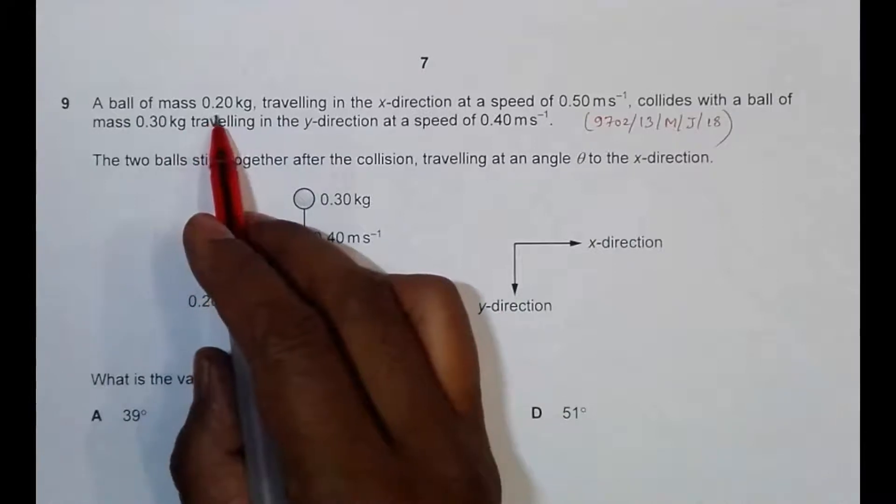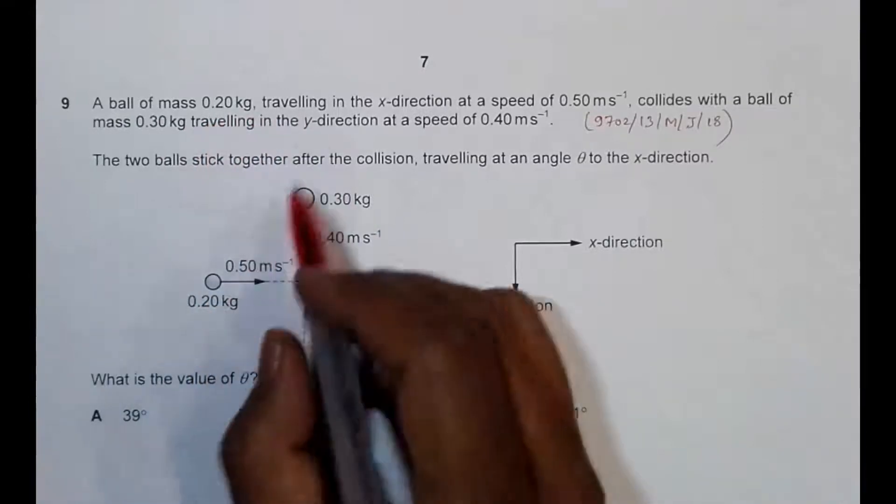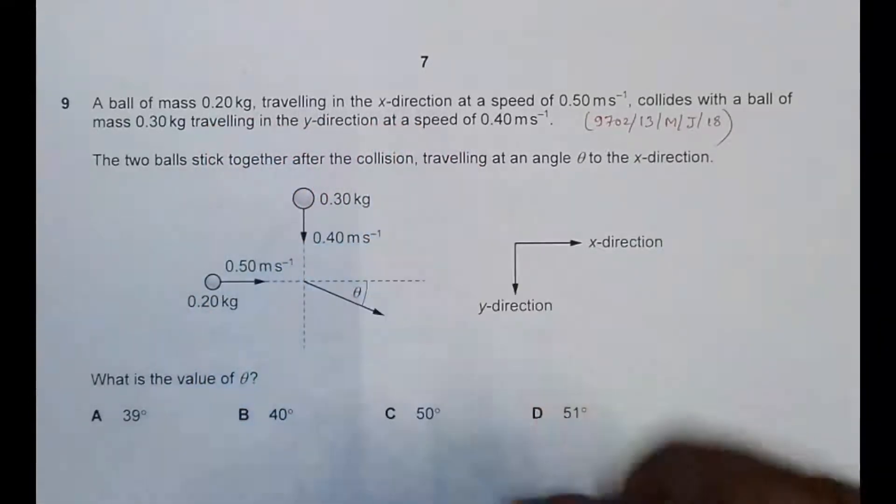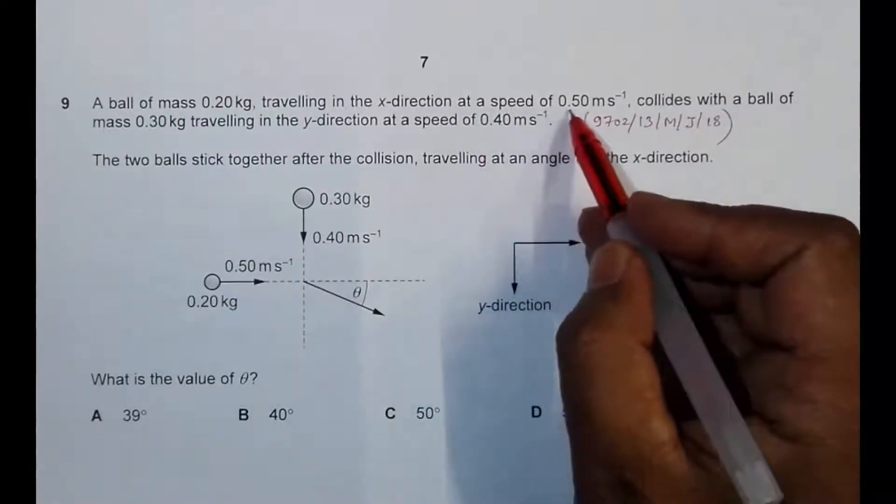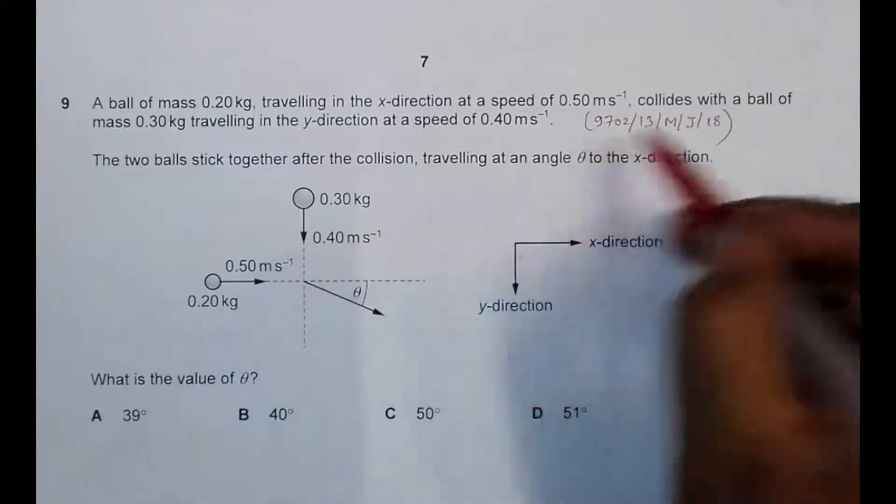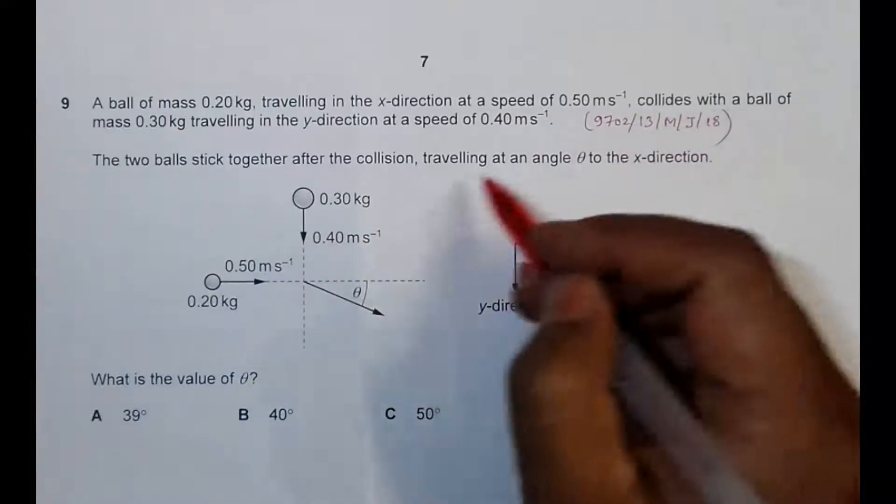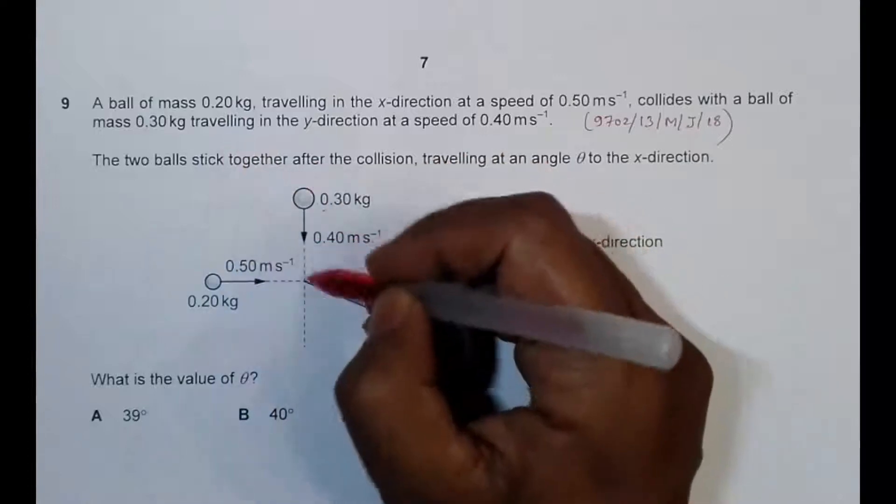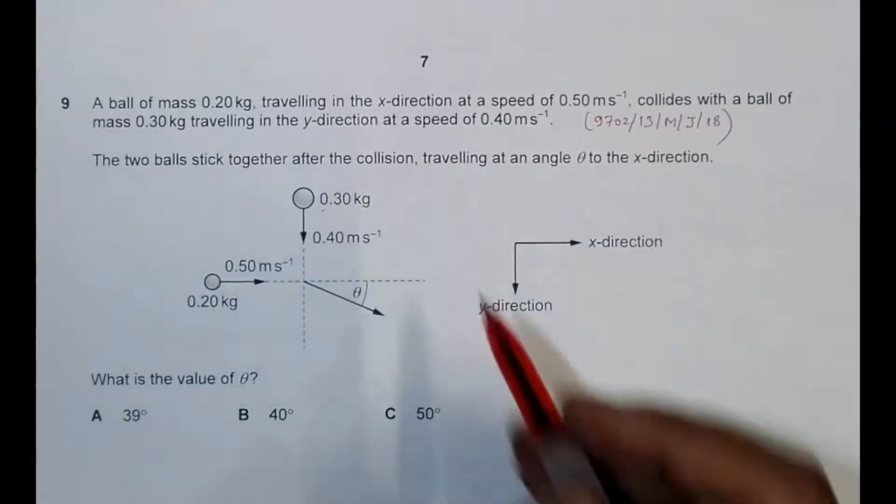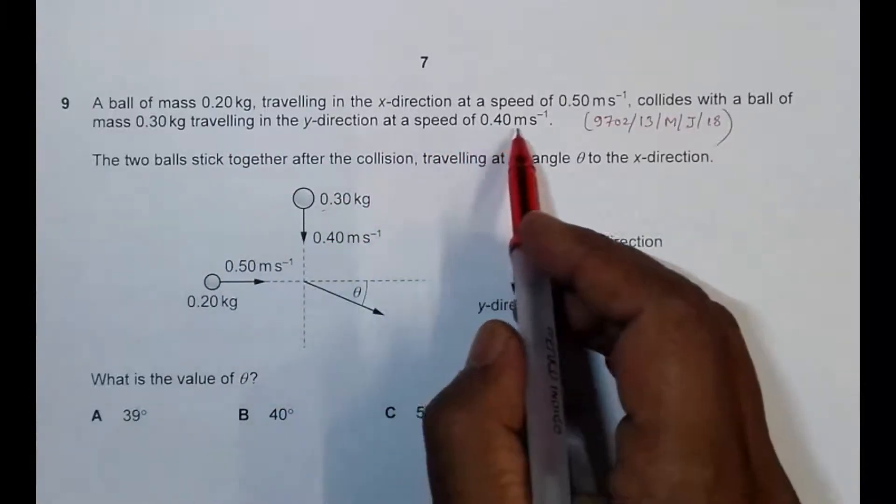A ball of mass 0.20 kg traveling in the x direction, so this direction is x as shown here, at a speed of 0.50 meter per second. Collides with a ball of mass 0.30 kg traveling in the y direction, this is the y direction shown here, at a speed of 0.40 meter per second.